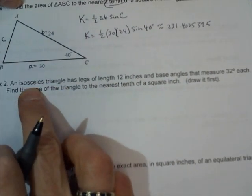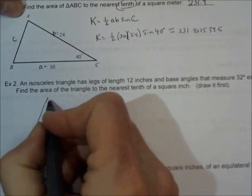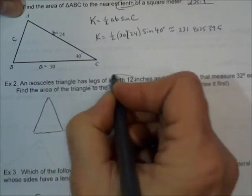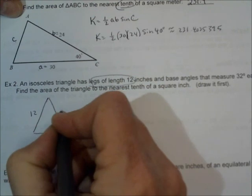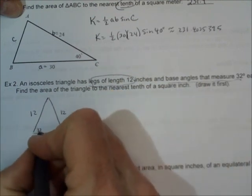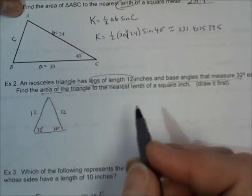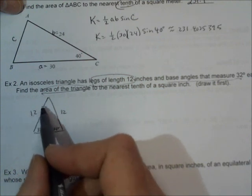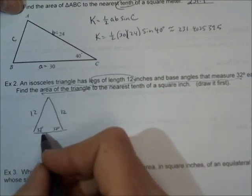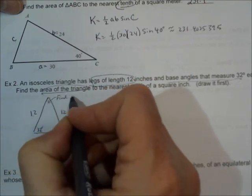Example 2 is another isosceles triangle question like what we had on yesterday's video. We're going to draw our isosceles triangle. The legs have a length of 12, and the base angles are 32 degrees each. To find the area of the triangle, we can't find the area unless we know side, angle, side. They haven't given us the apex angle, so you have to find that angle.